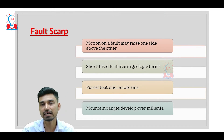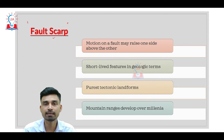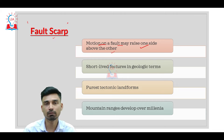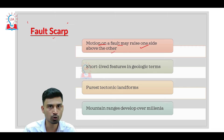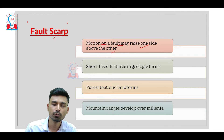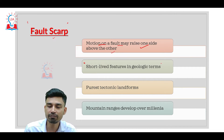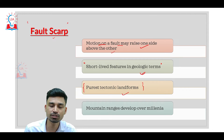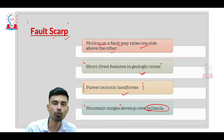The second type of tectonic landform is called a fault scarp. A fault scarp in simple terms can be defined as motion on a fault that may raise one side above the other. An escarpment develops because the central part of a region gets displaced downward. On the other hand, a fault scarp develops when there is a movement of one part of landmass against another. This is basically a short-lived feature in geological terms; however, fault scarps are considered the purest tectonic landforms. Mountain ranges that have developed over different regions of the earth over millennia are examples of fault scarps.